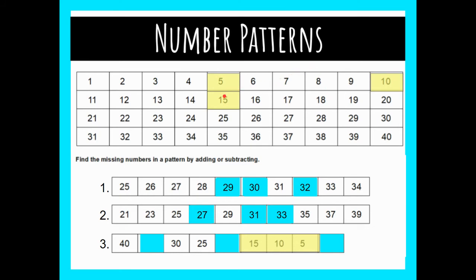What I noticed is that this number pattern is getting smaller — it starts at 15, then goes back to 10, back to 5. So this is a little bit different than the first two we did. This one is a subtracting pattern; the numbers are getting smaller.